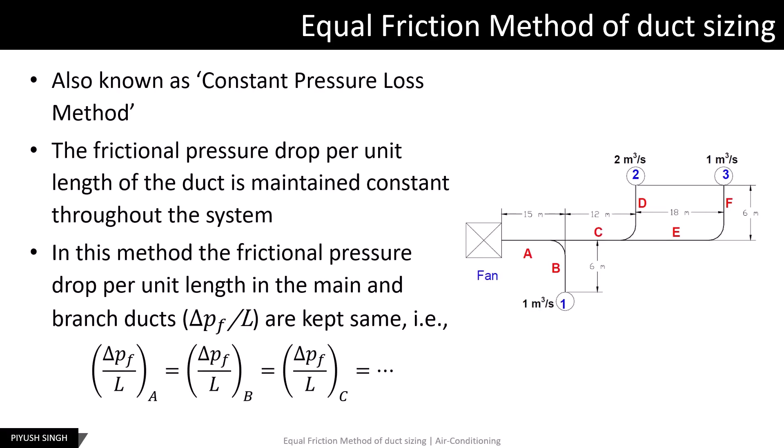The Equal Friction method of duct sizing, also known as the Constant Pressure Loss method, is one of the most popular methods of duct sizing in simple duct systems. The frictional pressure drop per unit length in this method is assumed to be constant throughout the system. Taking the example of the duct system shown in the figure, while sizing the ducts, the frictional pressure drop per unit length in ducts A, B, C, D, E, and F are assumed to be equal.